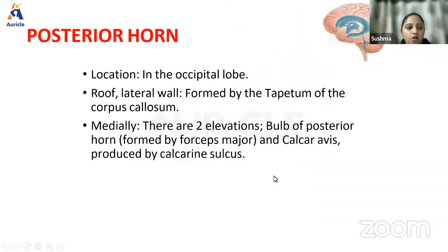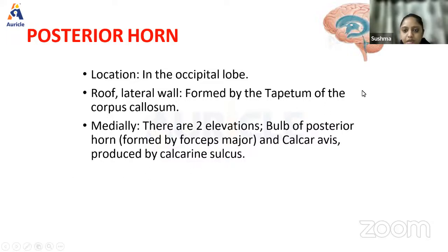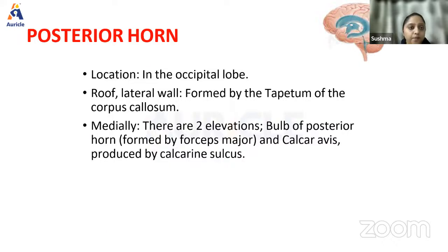The posterior horn is located in the occipital lobe. The roof and lateral wall are formed by the tapetum of the corpus callosum. Medially, there are two elevations: the bulb of the posterior horn, formed by the forceps major, and the calcar avis, produced by the calcarine sulcus. Knowledge of white matter bundles — fornix, forceps major, and minor — is very important and will be asked in your viva.